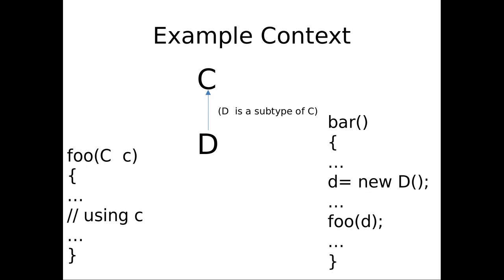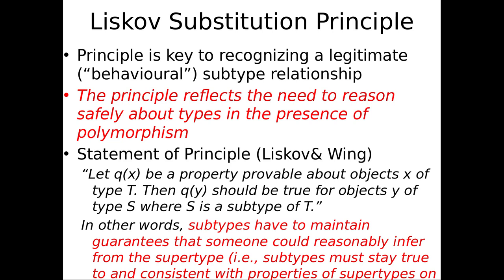Foo may be counting on the properties of a C. All it knows is something has been passed in like a C. It says 'it's a C — I'm counting on these features.' Every C observes these properties. They don't know they've been passed a D. To avoid introducing bugs in Foo, any D that's passed in has to guarantee whatever C guarantees. If D goes off in some wacky way and doesn't guarantee something C guarantees and gets passed to Foo, Foo could be bitterly disappointed.